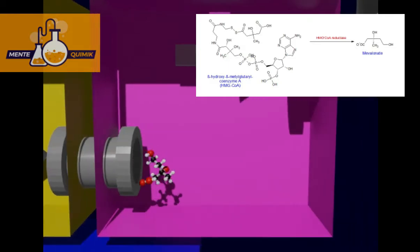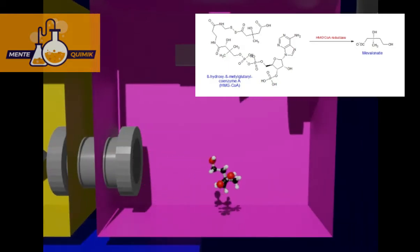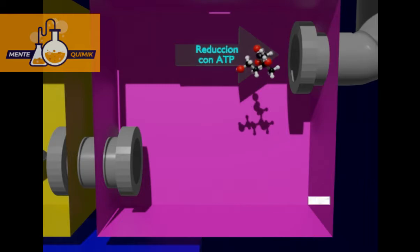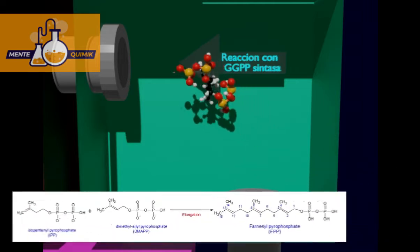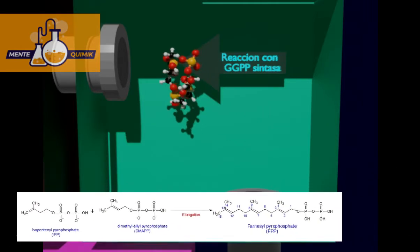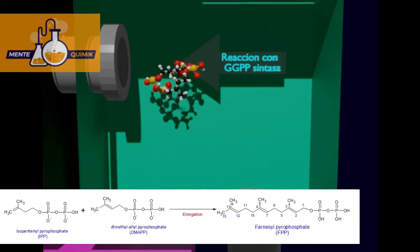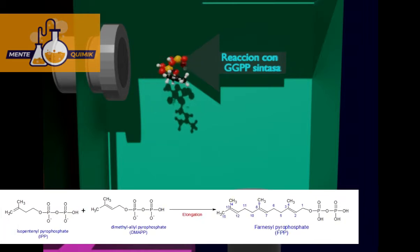Mevalonate is reduced with ATP to form two molecules in equilibrium: isopentenyl pyrophosphate (IPP) and its isomer dimethylallyl pyrophosphate (DMAPP). These two molecules undergo elongation — meaning the growth of the carbon chain — coming together to lengthen the chain and form farnesyl pyrophosphate.